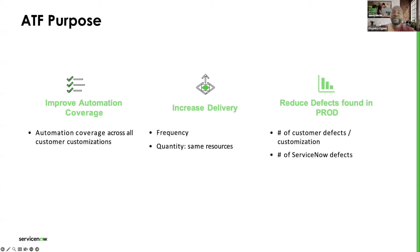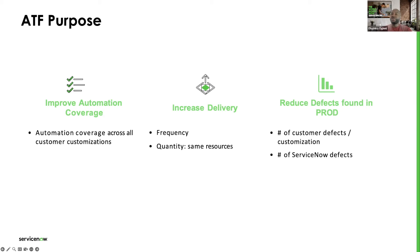So what's the purpose of ATF? The first is to improve automation coverage — helping you automate your tests across all customer organizations. If you've made modifications to your services and applications, ATF should help you test those modifications. Next, we're trying to increase delivery speed. We also want to reduce defects found in production, which is why we always advise customers to run ATF tests in a sub-production instance, to reduce the number of defects or customization issues you might encounter.